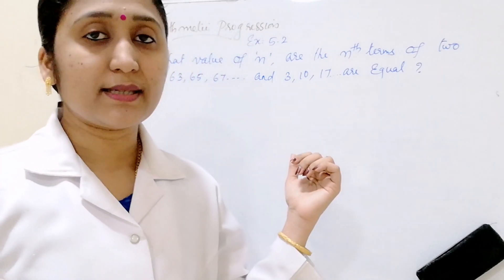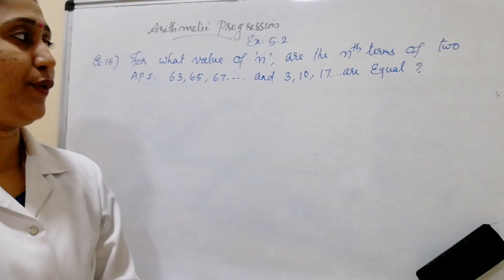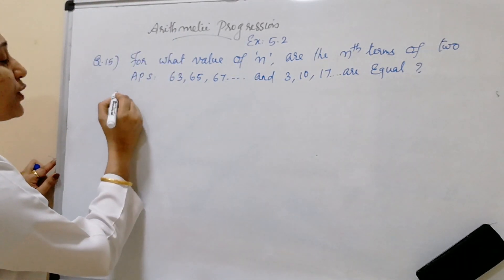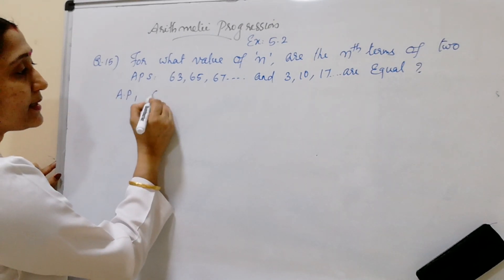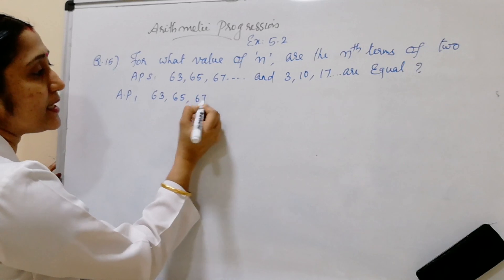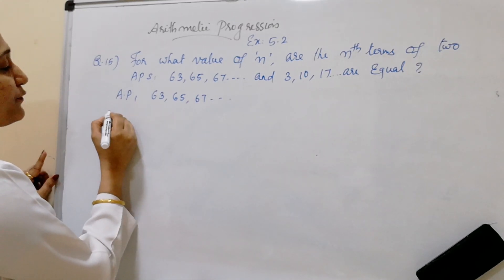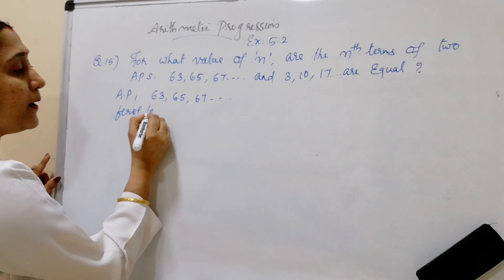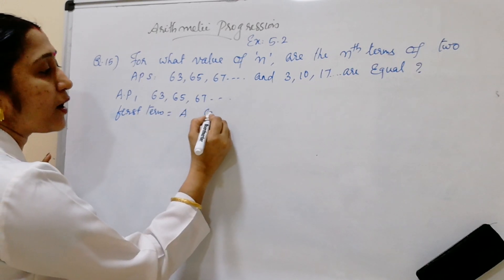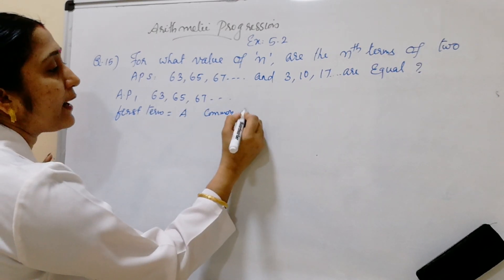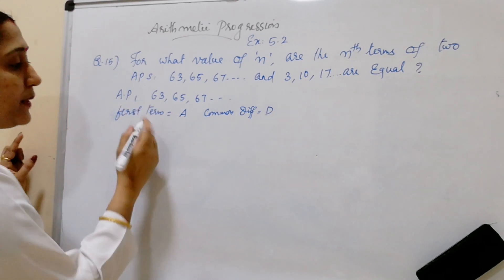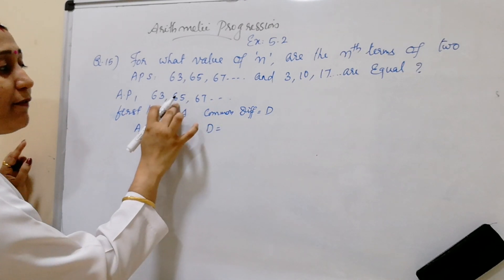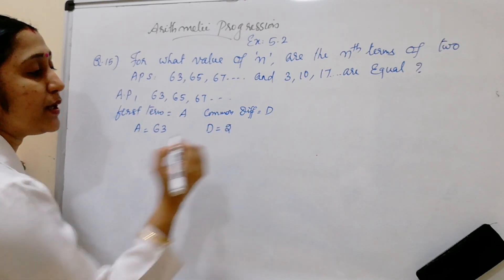Let us start today's class. For what value of n — here we have 2 arithmetic progressions. We take arithmetic progression 1, AP1, as 63, 65, 67, etc. From this, take the first term as capital A and the common difference as capital D. The first term A is equal to 63. The common difference is 65 minus 63, which is equal to 2.